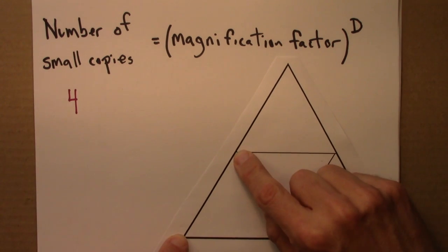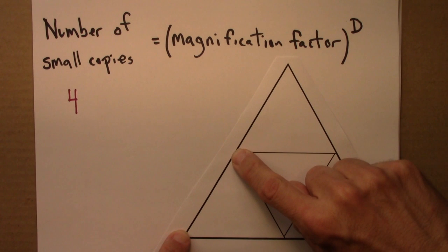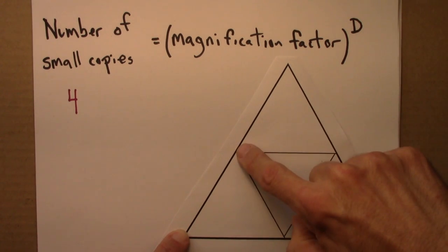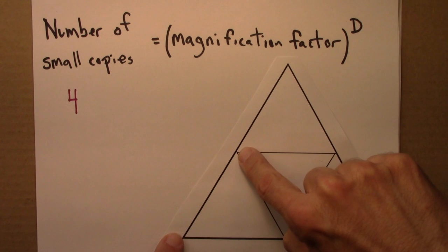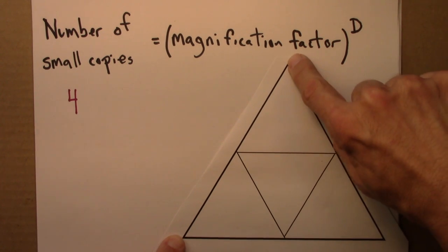And to see that, maybe look at this length between my two fingers here. So to go from this triangle to this triangle, I see that I have to take this length and make it twice as large.